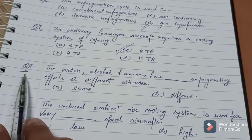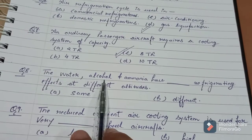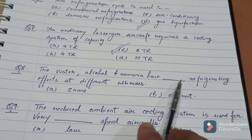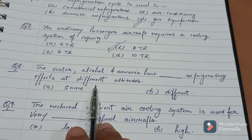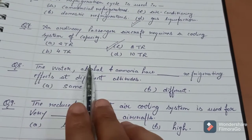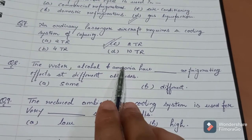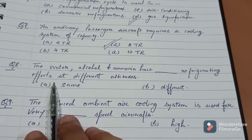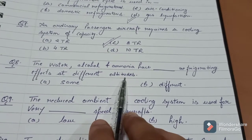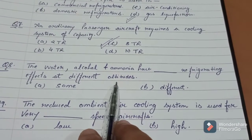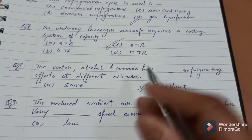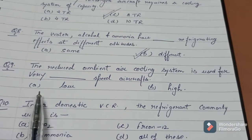Coming to question number 8. The water, alcohol, and ammonia have dash refrigerating effects at different altitudes. Does water, alcohol, or ammonia's refrigerating effect change at different altitudes, different heights? Yes, it is different.